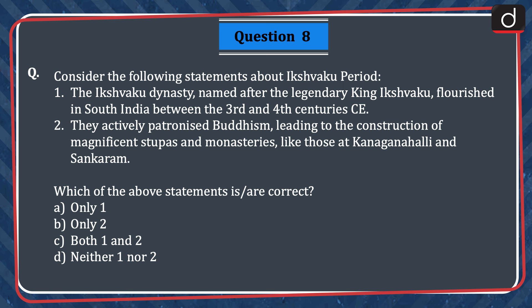Next question: consider the following statements about the Ikshwaku period. 1. The Ikshwaku dynasty, named after the legendary king Ikshwaku, flourished in South India between the 3rd and 4th centuries CE. 2. They actively patronized Buddhism, leading to the construction of magnificent stupas and monasteries, like those at Kanjannhali and Shankaram. Which of the above statements is or are correct? Only one, only two, both one and two, or neither one nor two? The correct answer is option C, both one and two.